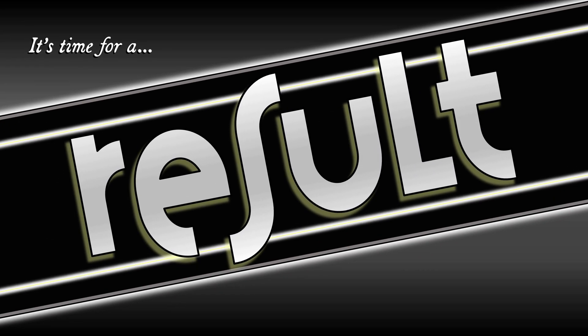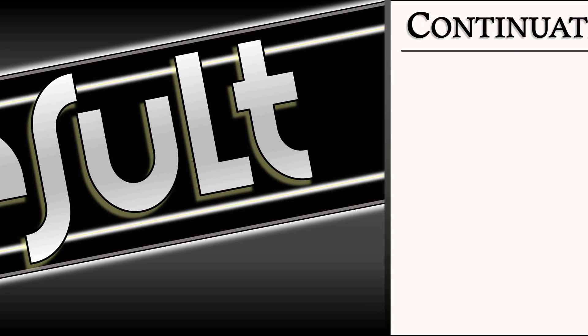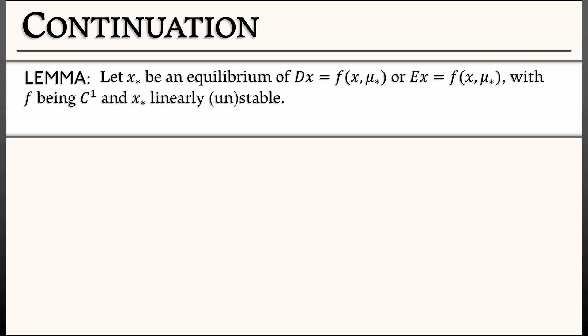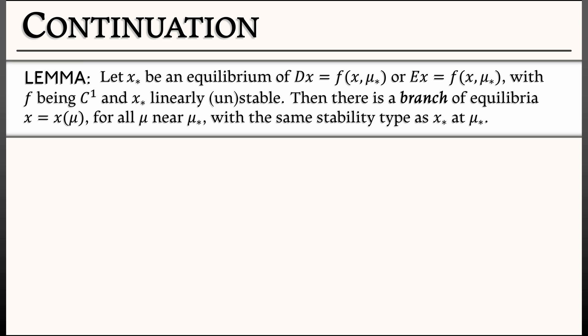For now, I want to focus on a result that says that most of the time, everything is swell. Here is a lemma, a continuation lemma. This gets a little technical, but stick with me. Let's say that x* is an equilibrium in a continuous time parametrized system, dx = f(x, μ*), or x̄ = f(x, μ*), where μ* is a particular parameter, and f is C¹, that is continuously differentiable, and x* is a stable or unstable equilibrium. Then, as you change μ, there is a branch of equilibria x(μ) for all μ sufficiently close to μ*, and these equilibria all have the same stability type as x* at μ*.